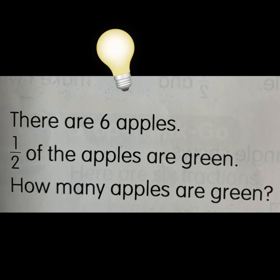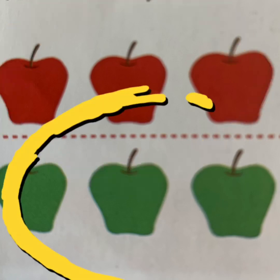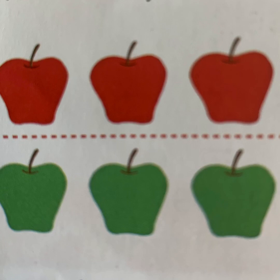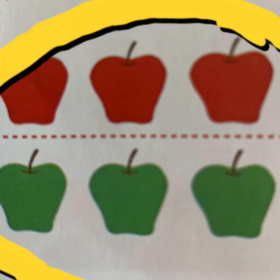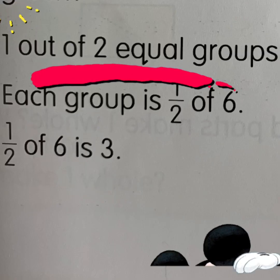Now let's work on this sum. There are six apples. Half of the apples are green — how many apples are green? There are two groups: this is one group and this is another group. Also make a note, in each group we have three apples — three red and three green. So now if we have to find how many apples are green, we are going to write this as half of six.